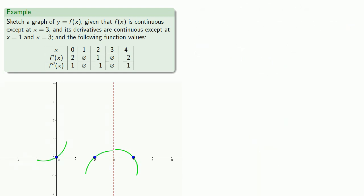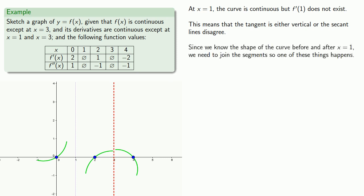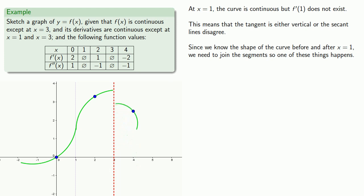Finally, we have a peculiarity at x equals 1. The curve is continuous, but f prime of 1 does not exist. This means either the tangent is vertical or the secant lines disagree. Since we know the shape of the curve before and after x equals 1, we need to join the segments so that one of these two things happens. If we join them so the tangent line is vertical, we can then join the other segments keeping in mind that x equals 3 is a line we cannot cross, producing a graph that looks something like this.